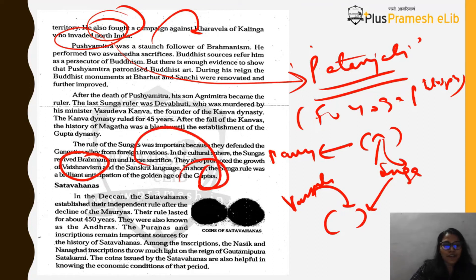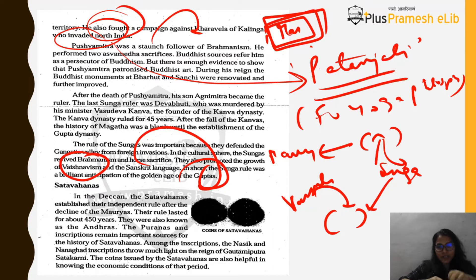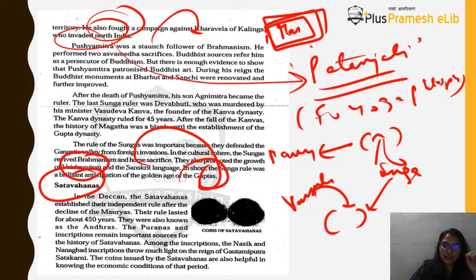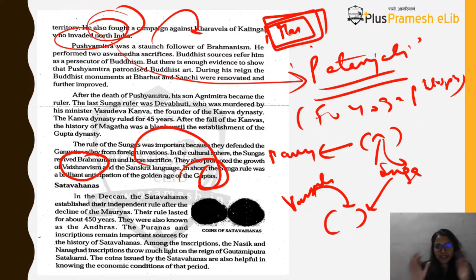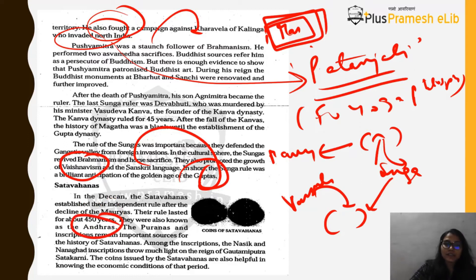While the Gangetic Valley saw Mauryas replaced by Sungas and then Kanvas, south India — the Deccan — saw the emergence of the Satvahana dynasty, which declared independence from the Mauryas. Also called Satvahanas or Andras, their rule lasted about 450 years, making it a very stable reign. The Puranas and inscriptions are the most important sources for Satvahana history.